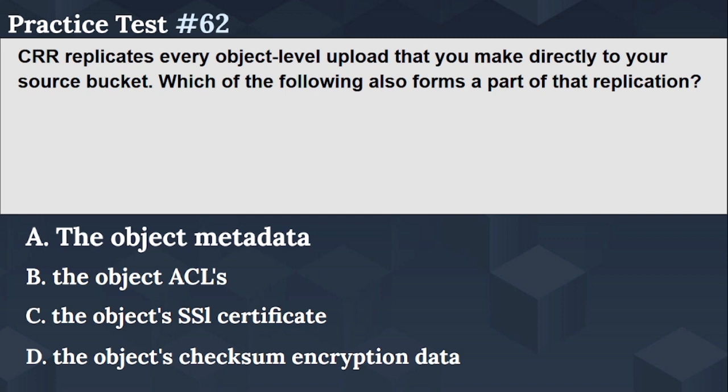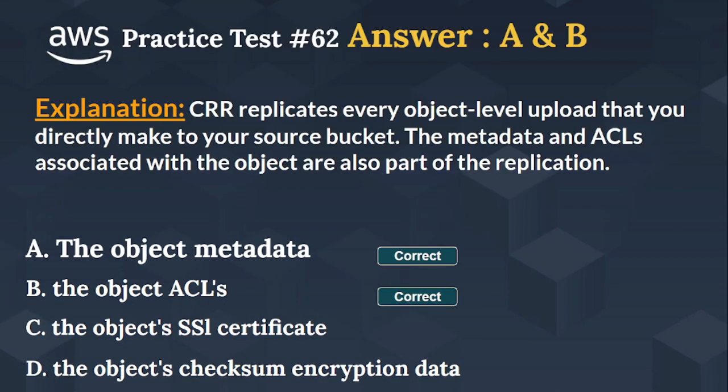5, 4, 3, 2, 1. The right answer is Options A and B — the object metadata and the object ACLs. CRR replicates every object-level upload that you directly make to your source bucket. The metadata and ACLs associated with the object are also part of the replication.